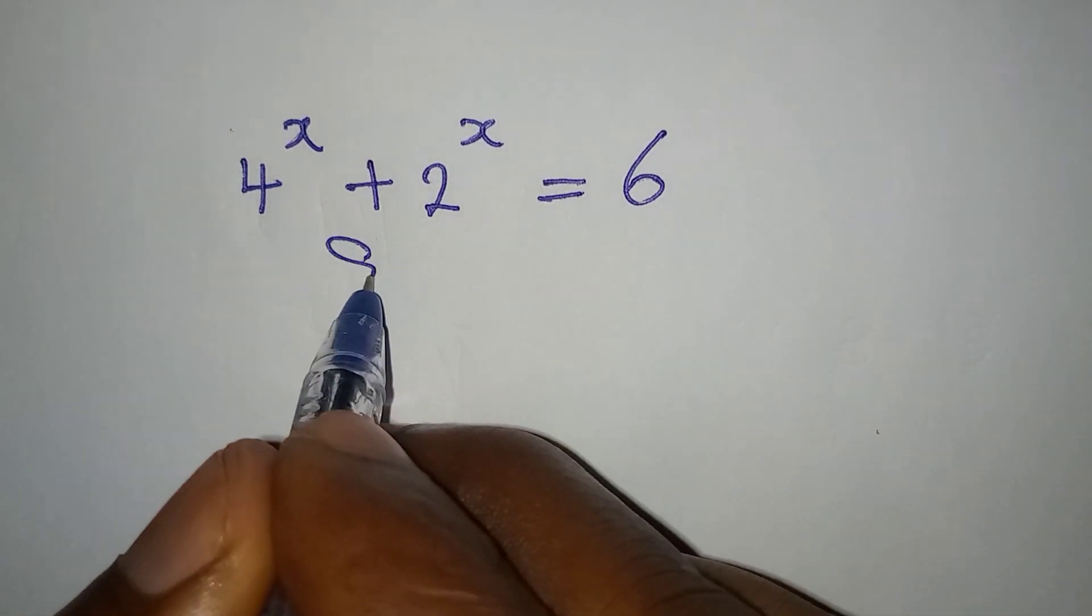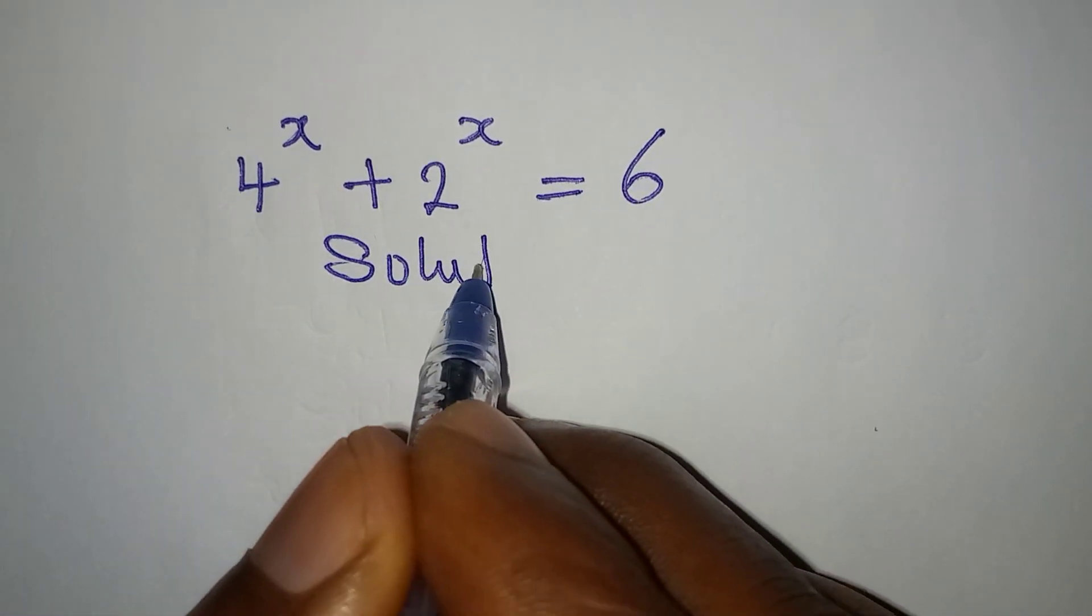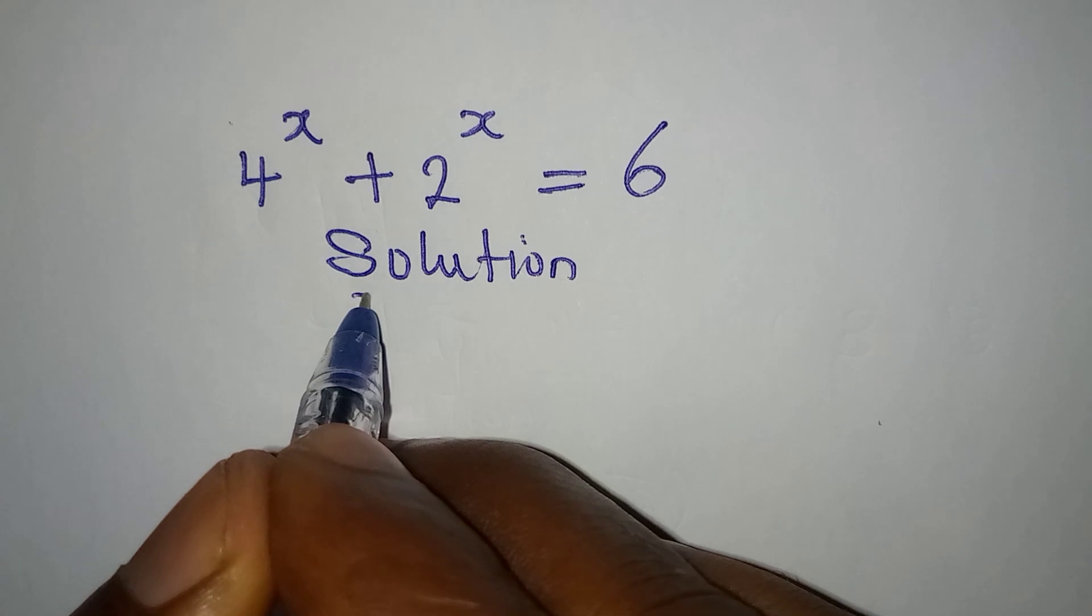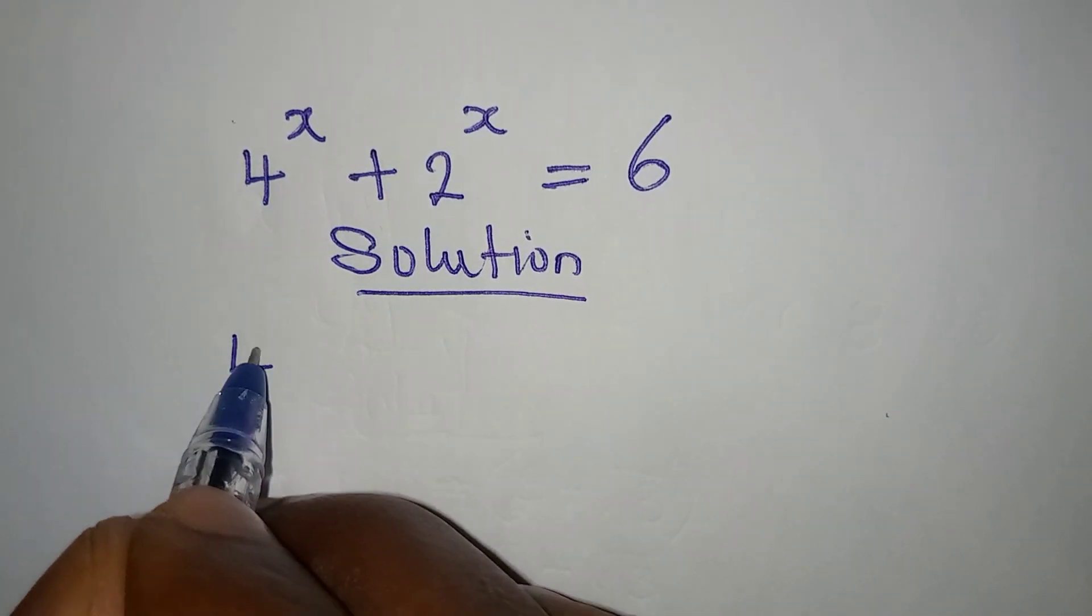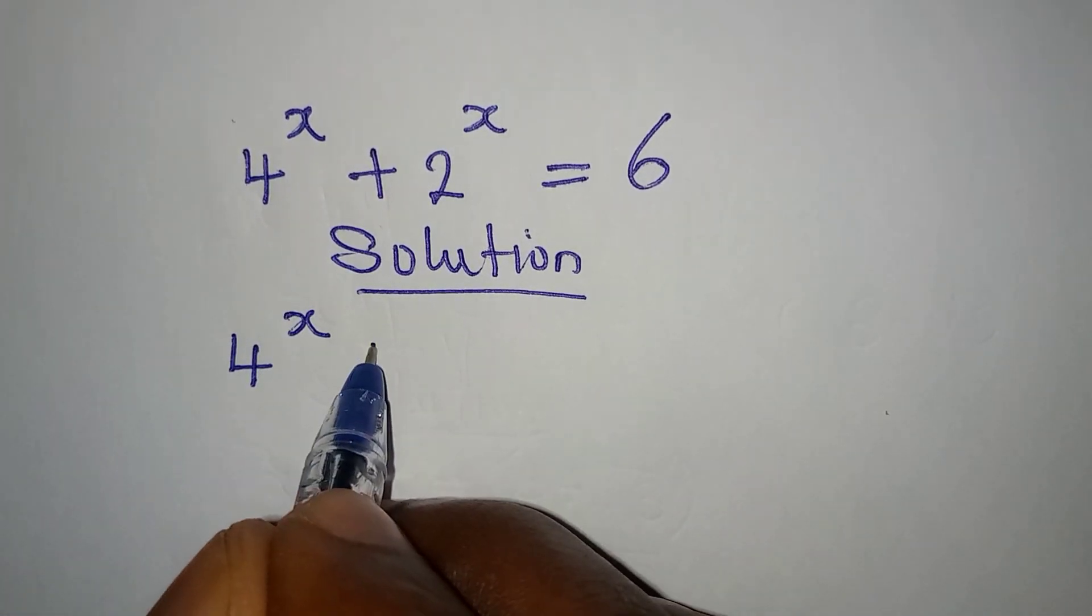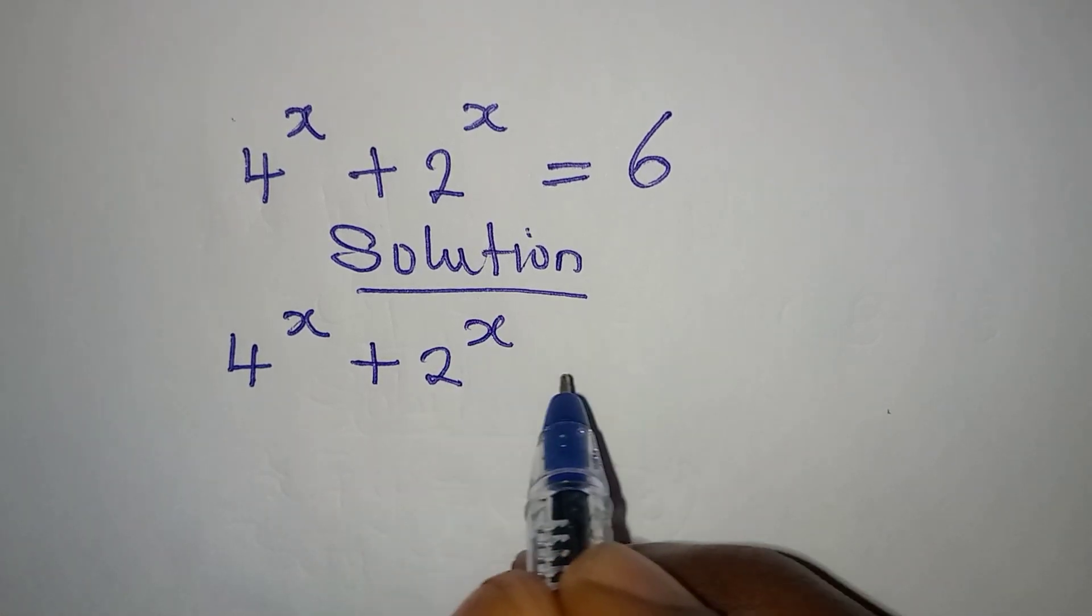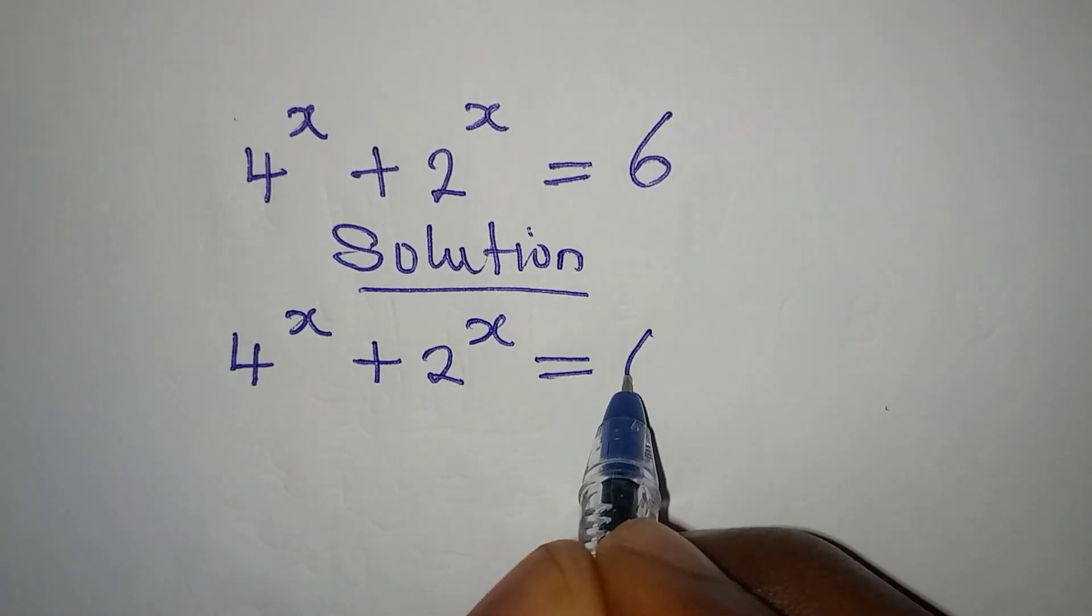Hello everyone, let's provide the solution to this problem. We have 4 to the power of x plus 2 to the power of x equal to 6.